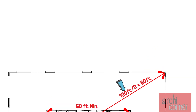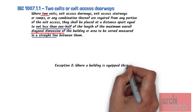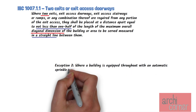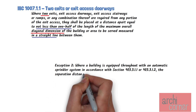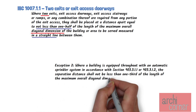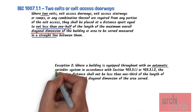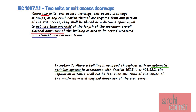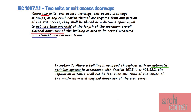Now there is an exception to this. Exception number 2 in this section states: Where a building is equipped throughout with an automatic sprinkler system in accordance with section 903.3.1.1 or 903.3.1.2, the separation distance shall not be less than one-third of the length of the maximum overall diagonal dimension of the area served. This exception only applies if the entire building is provided with an automatic sprinkler system, and it allows us to reduce the required separation distance to one-third instead of one-half the diagonal dimension.